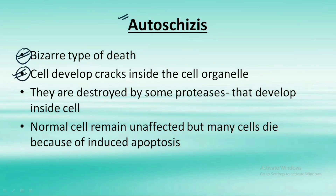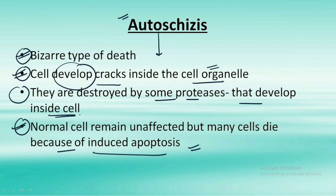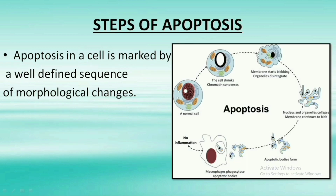The third type is autosis. It is a bizarre type of death where the cell develops cracks inside the cell organelles, which are then destroyed by proteases that develop inside the cell itself. The normal surrounding cells remain unaffected, but many cells can die off because of induced apoptosis. So in autosis, cracks form in cellular organelles, and protease enzymes produced within the cell destroy them.